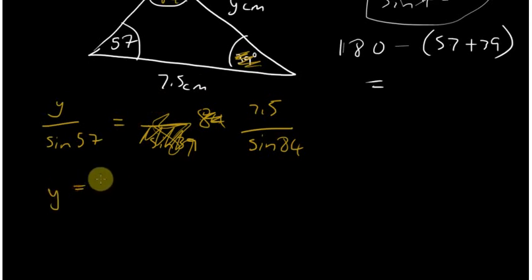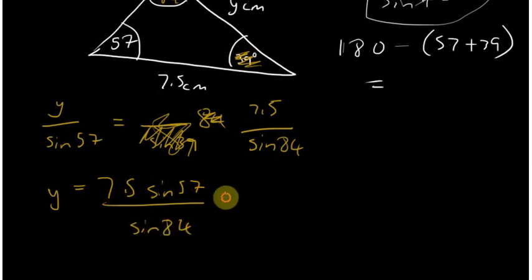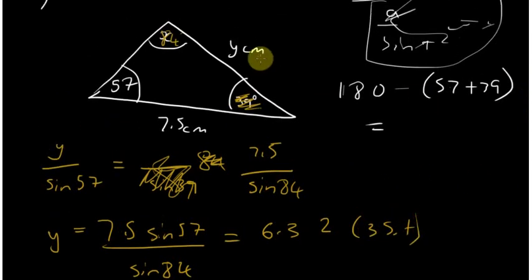All right, so let's just solve for Y then. So 7.5 sine 57 divided by sine 84. I hope you've got there before me. I'm just plugging in my calculator, sine 57 divided by sine 84. And hopefully you've got the same answer as me because I got 6.3, 2 significant figures, which looks about right seeing as that length is 7.5.